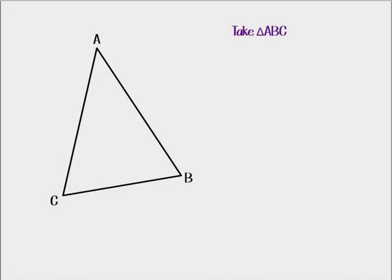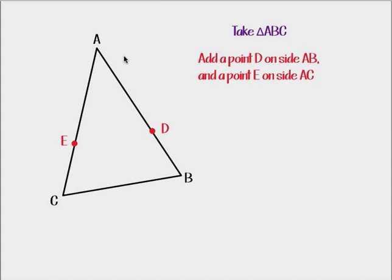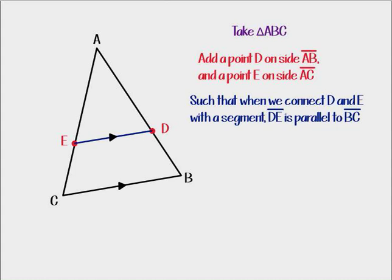So today we're going to take triangle ABC and we're going to add a couple of points to this triangle. We're going to add a point D that's somewhere on side AB, and a point E that's somewhere on side AC. We're also going to connect those two points with a segment, and here's the key to triangle proportionality. Segment DE needs to be parallel to segment BC. Regardless of where D and E are on those sides, those segments need to be parallel for this to work.